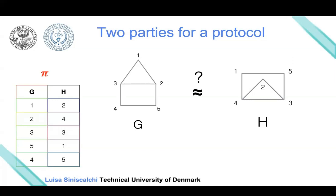Let's take nodes 1 and 2, which are adjacent in G. Our permutation maps node 1 to node 2 in H, and maps node 2 to node 4 in H. We can check that nodes 4 and 2 are still adjacent in H, just as nodes 1 and 2 were adjacent in G.